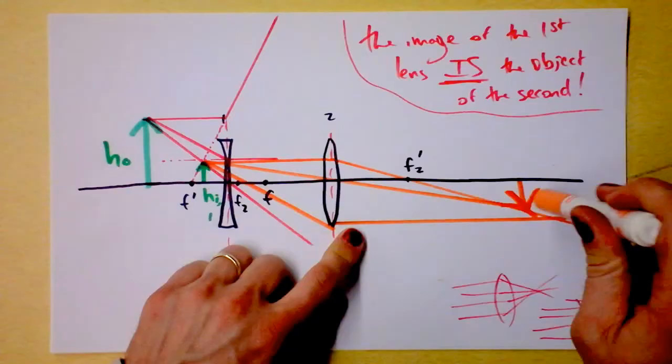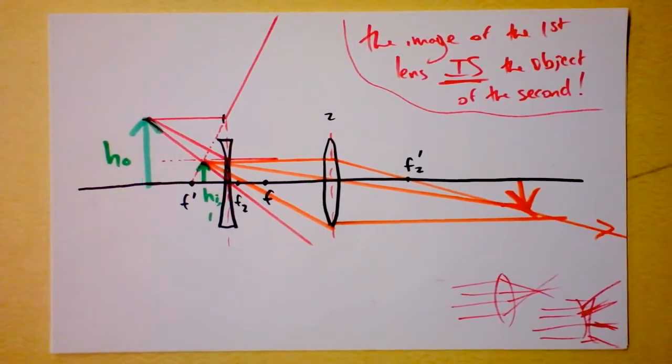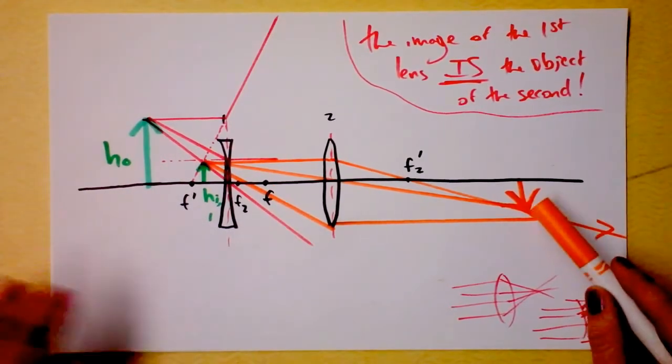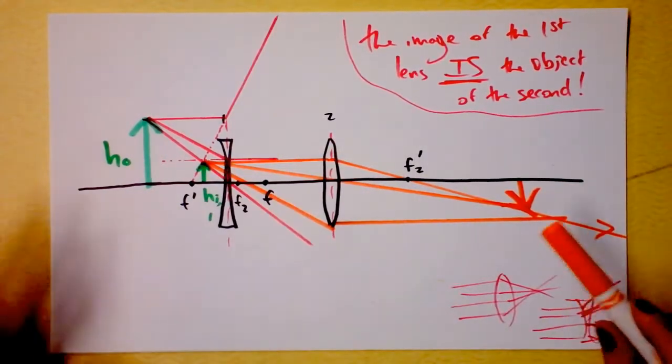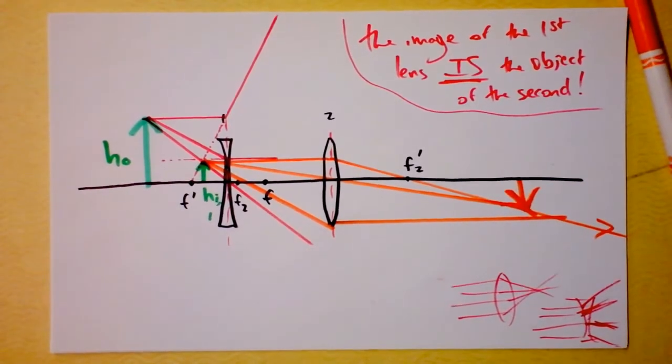And this thing right here, this image - is it real or is it virtual? Ask yourself that. Well, is it inverted from the original thing? Are there actually light rays crossing each other there? Or is it just darkness or the rays that are diverging or something? What's going on right here? Think about that. Post it in the comments. Bye-bye.